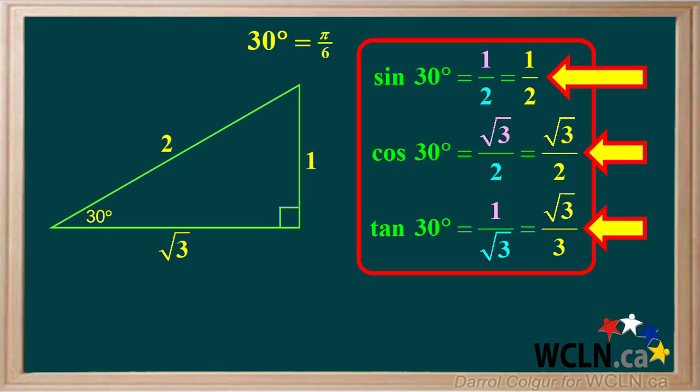To summarize, these are the exact values for the sine, cosine, and tangent of 30 degrees, or pi over 6 radians.